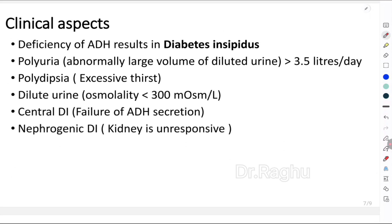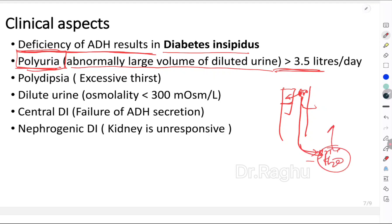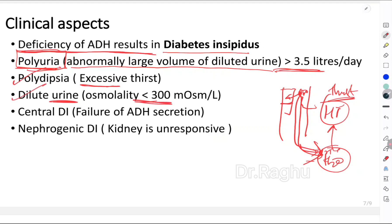Diabetes insipidus is a repeated exam question. It occurs due to deficiency of ADH. Without ADH, water is not reabsorbed from the renal tubule, so more water is lost in the urine — a condition called polyuria, defined as passage of abnormally large amounts of dilute urine, more than 3.5 liters per day. Excessive water loss stimulates the thirst center in the hypothalamus, causing excessive thirst called polydipsia. The urine osmolality is low, less than 300 milliosmols per liter.